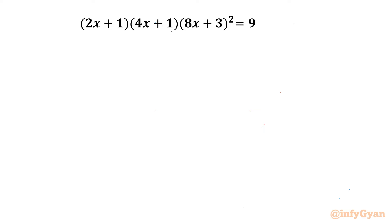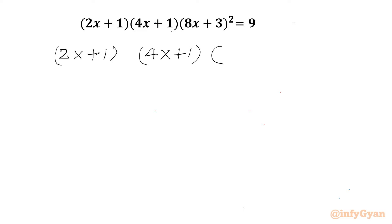Welcome to InfiGam, my dear friends. In today's video we have one very interesting quartic equation: (2x+1)(4x+1)(8x+3)² = 9, and we have to find out all four solutions. Let's get started by writing our equation once: (2x+1)(4x+1)(8x+3)² = 9.